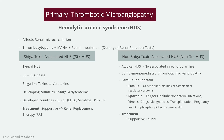In atypical HUS, in addition to supportive care including renal replacement therapy if necessary, management includes plasma exchange to replace complement components and remove pathogenic autoantibodies. Recently, impressive results have been reported with the anti-C5 monoclonal antibody eculizumab, which binds to C5, thereby preventing activation of the terminal complement cascade.